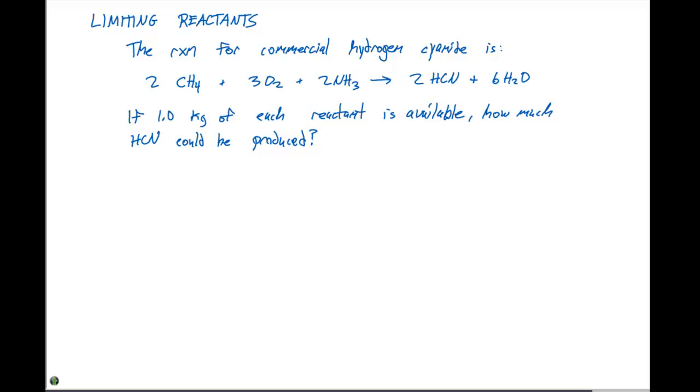So, the first thing that we're going to have to do is determine what's called the limiting reactant, and that is what's going to run out first. So, we have one kilogram of CH4, one kilogram of O2, and one kilogram of NH3. When we react those together, we're trying to figure out how much HCN is produced. So, why don't we take 1,000 grams and use stoichiometry and dimensional analysis to figure out how many moles of HCN could be produced from 1,000 grams of each reactant.